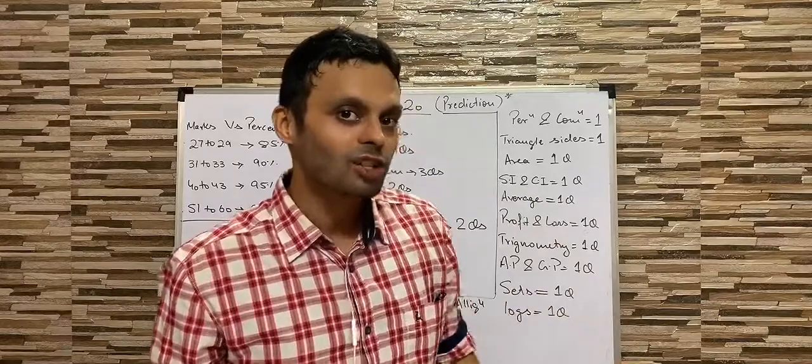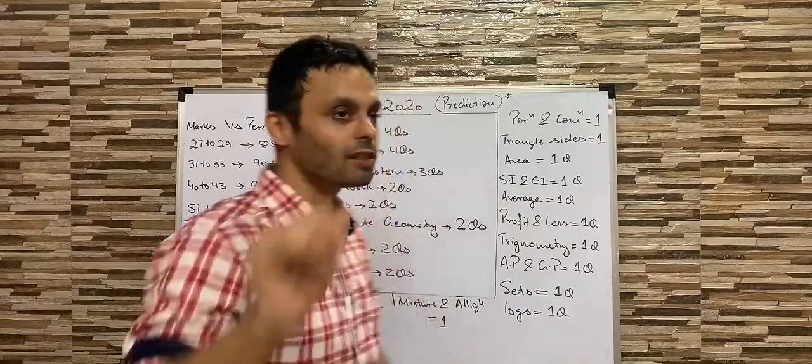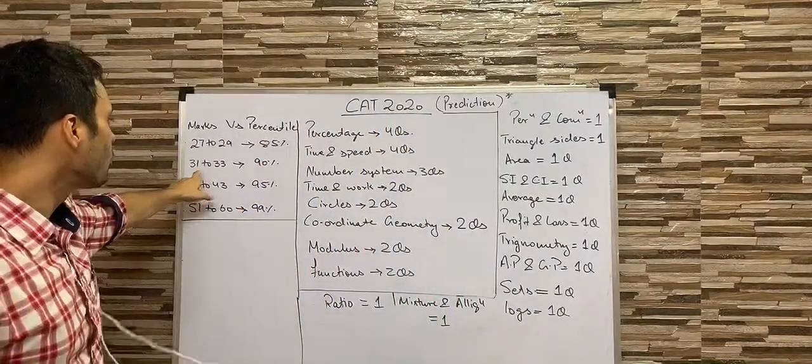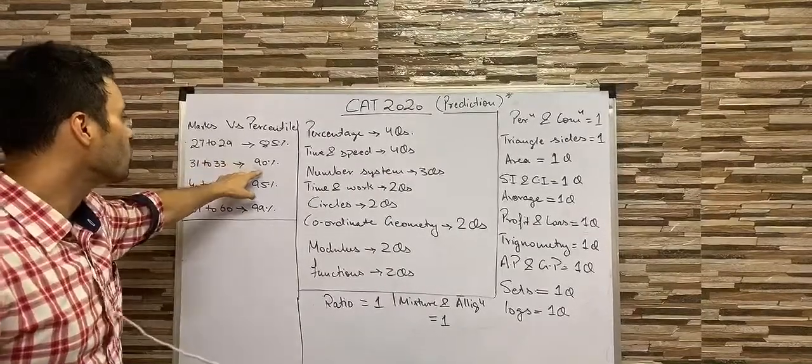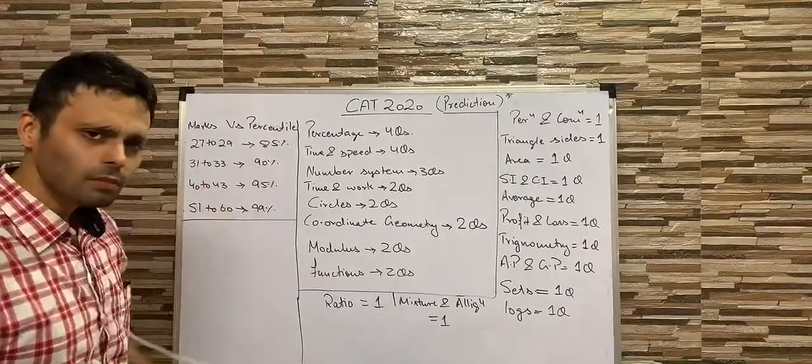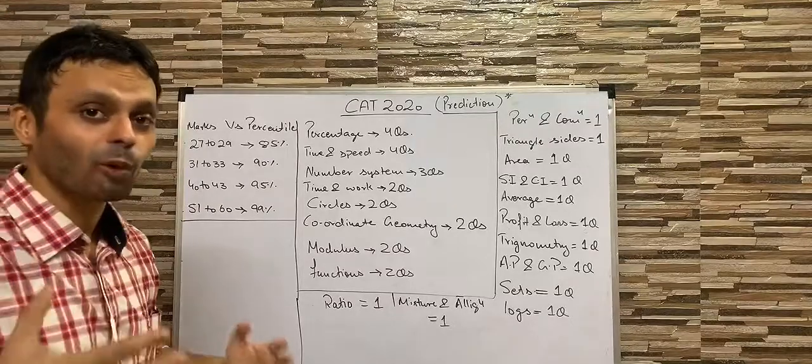Now, 12 threes are how much? 36. Now, look at this chart here. If you score more than 31 marks, definitely you're going to score more than 90 percentile.